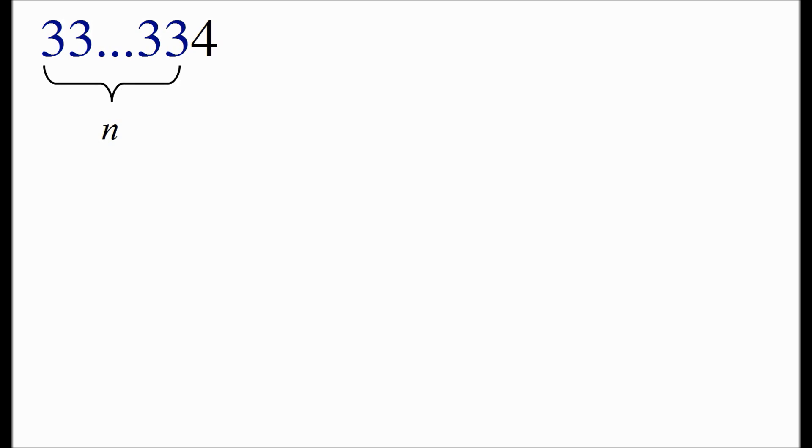The first thing we're going to do is write that number in a different form. And this number will be 1 third of 10 to the n plus 1 plus 2 thirds. So for example, if you had the number 34, that would be 1 third of 100 plus 2 thirds. And similarly, 334 is 1 third of 1,000 plus 2 thirds.